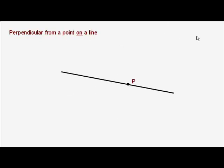So, how do we use that to do another construction, which is to draw a perpendicular line from a point on a line? In other words, we want a line which is going through P, which is perpendicular to the other line.